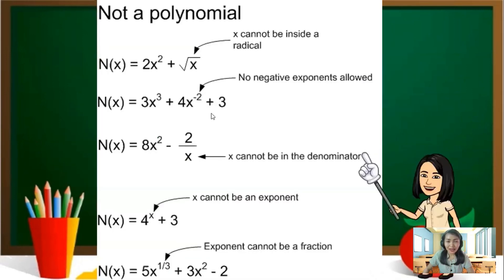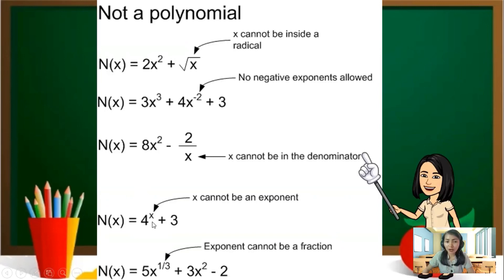Now, these are the rules to know if the given is a polynomial or not a polynomial. First rule, the variable should not have a radical sign. Next, the exponent should not be negative. The variable should not be on the denominator. The variable cannot be an exponent. And the exponent cannot be a fraction.